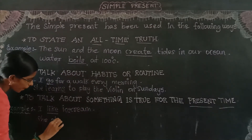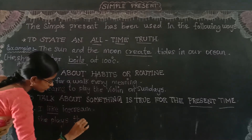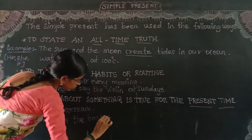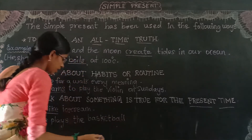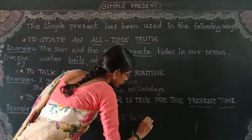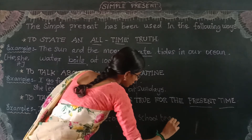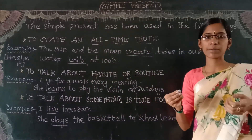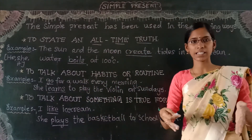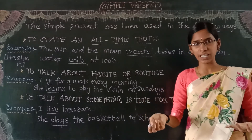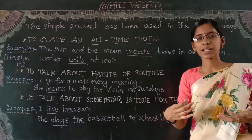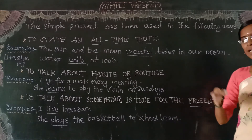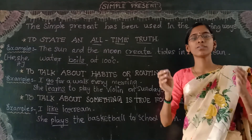See here: 'She plays basketball for the school team.' This is true for the present time. Tomorrow she may be rejected from the team, but now she is playing for the school basketball team. So if something is true for the present time, you can use the present form in that sentence.